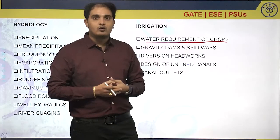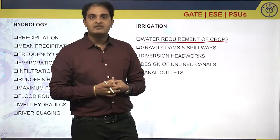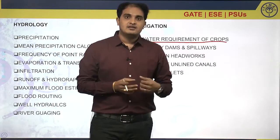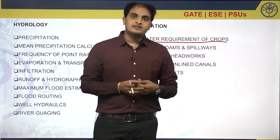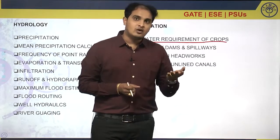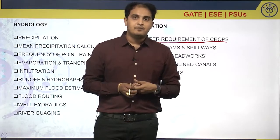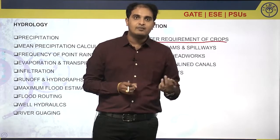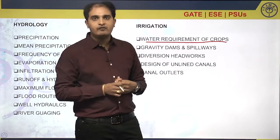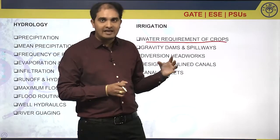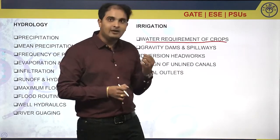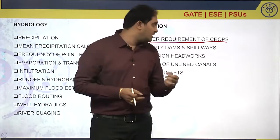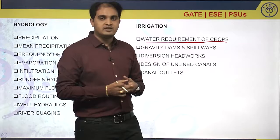Next we have crop period, which is the time between sowing and harvesting of a crop. The time between the first watering and the last watering given to the crop is called the base period. Generally, crop period is slightly more than base period, but in irrigation engineering we assume both to be equal.